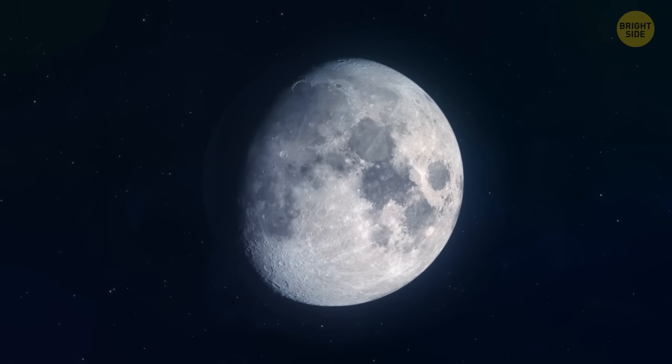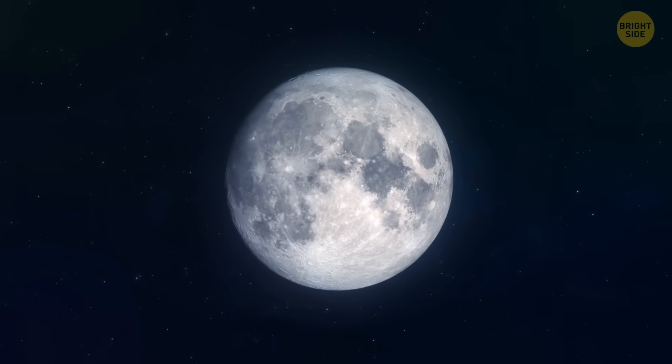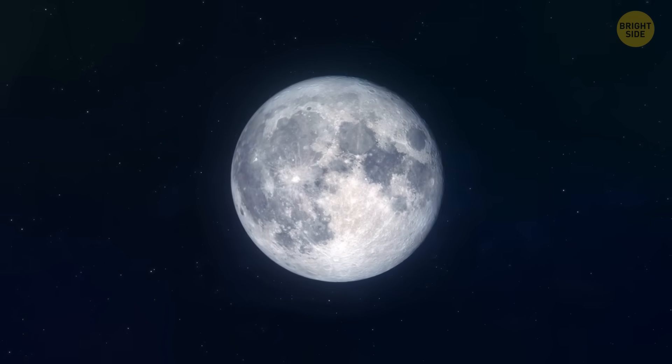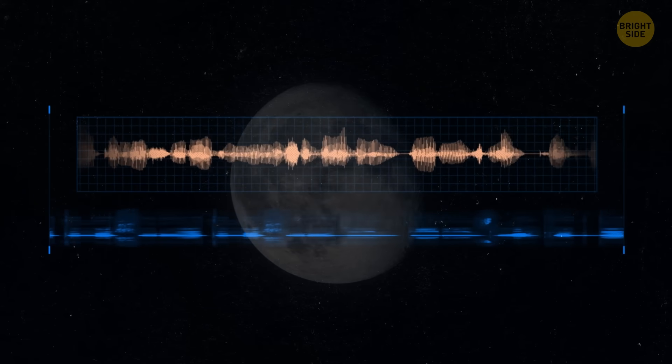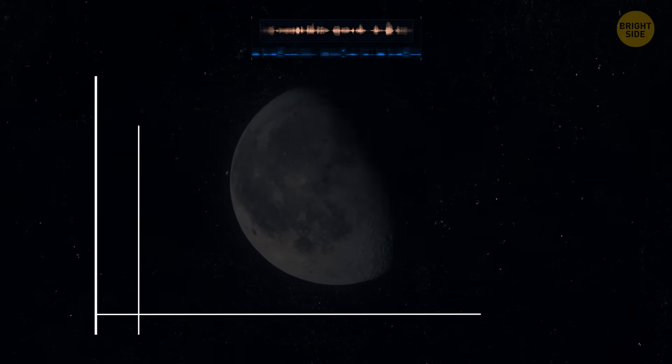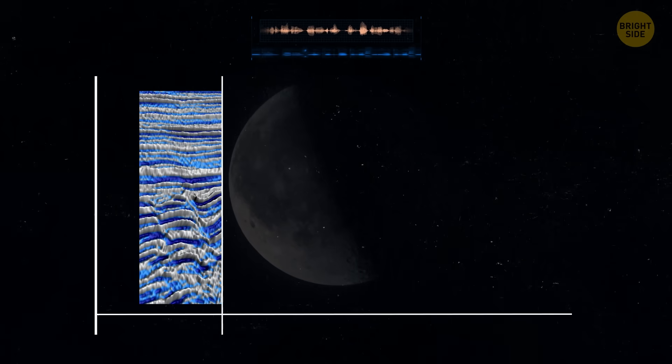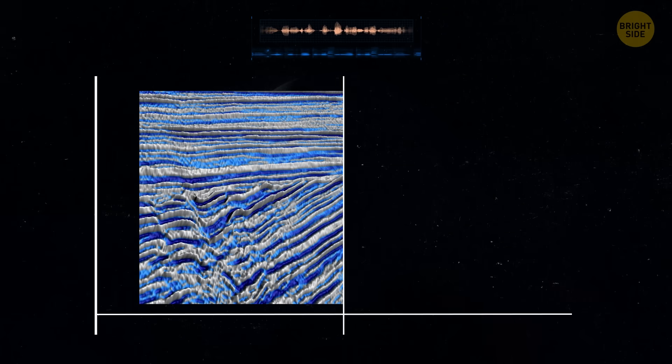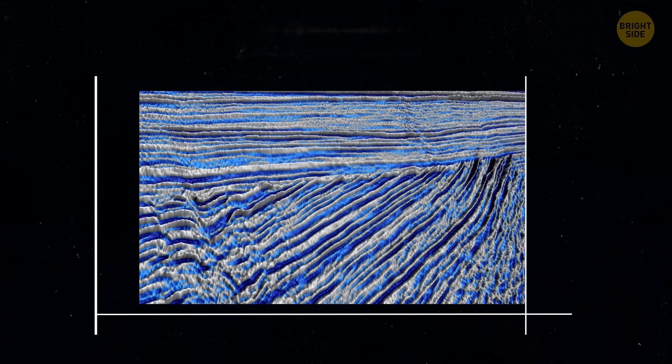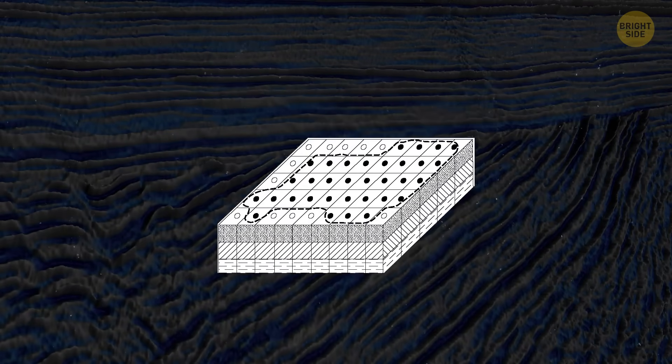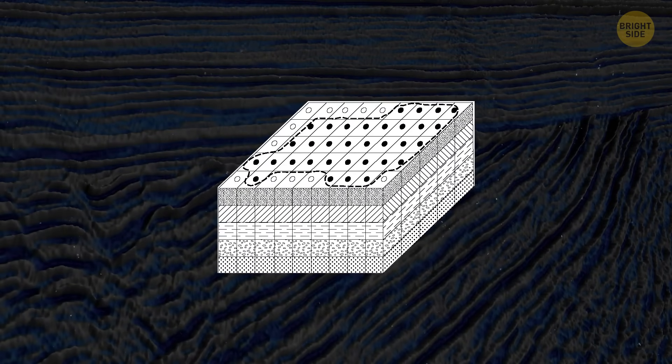The same idea can apply to other objects in our solar system, or planets, or, in this case, the moon. When quakes or moonquakes happen, they generate sound waves. And by carefully listening to and studying these waves, scientists can create a detailed map of what's inside the object. They can figure out things like different layers, what they're made of, and how they're arranged.